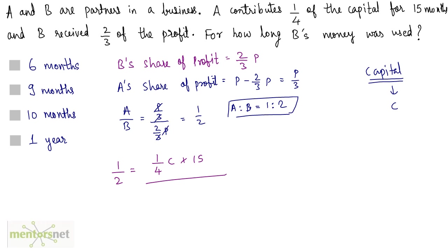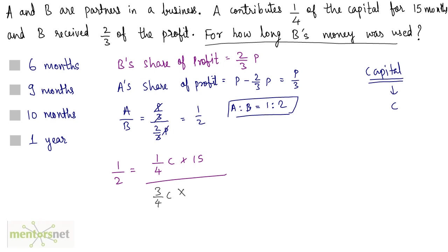Now let us calculate B's share. A contributes 1 fourth of the capital, which means the rest — 3 fourths of the capital — is contributed by B. So we can write the investment done by B as 3 fourths of the capital, times the time period of B. That is what we have to find out — let us assume that the time period is Y.